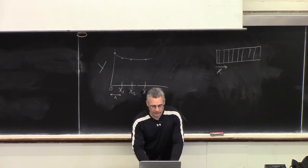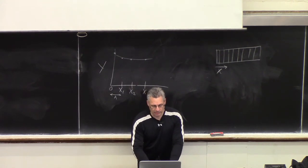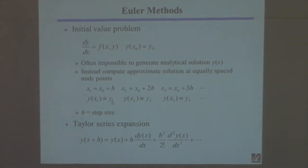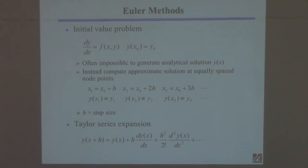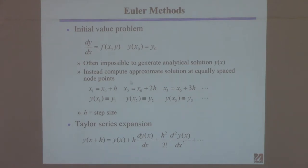This process is called discretization of the model. For shorthand notation, I'm going to call the value of Y at the point X1 to be Y1, the value of Y at X2 to be Y2. This doesn't mean Y is a vector — it's the value of the one variable Y at different points X. So Y1, Y2, Y3, and so on. My goal is to generate these values using an algorithm. The simplest ones are called Euler methods.